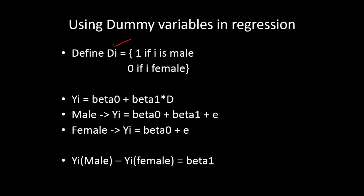The dummy d_i takes one or zero based on whether an employee is male or female. The model becomes: y_i = β₀ + β₁d_i, where d is the dummy variable. When d takes zero — the case of female — this term vanishes, and we only have β₀. In the case of male, y_i = β₀ + β₁ plus the error term, because d takes one.